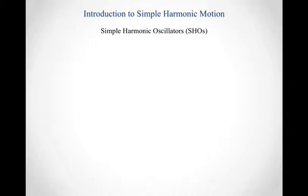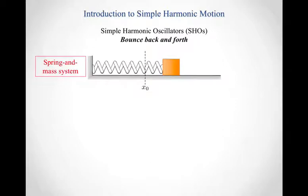Let's start by talking about some basic concepts that define simple harmonic motion. The first thing we'll do is talk about a couple of different types of simple harmonic oscillators that we're going to focus on in this class. The first one is an object that bounces back and forth, and our clearest example of this is a spring and mass system.